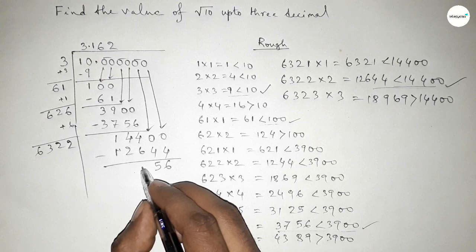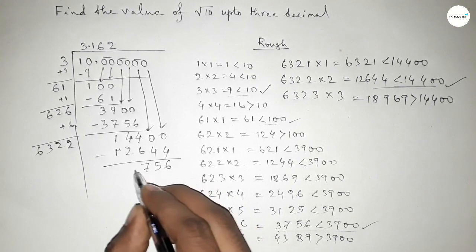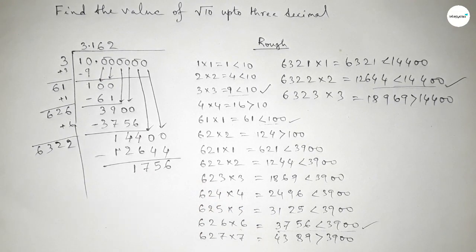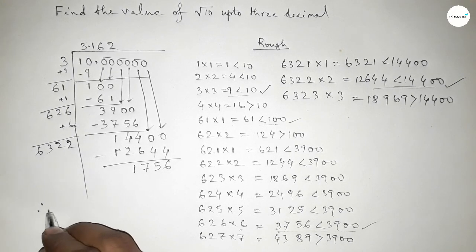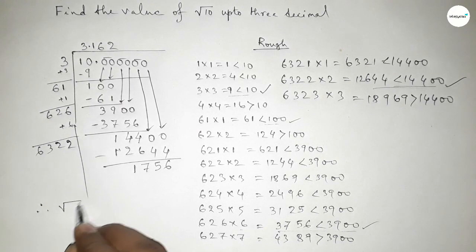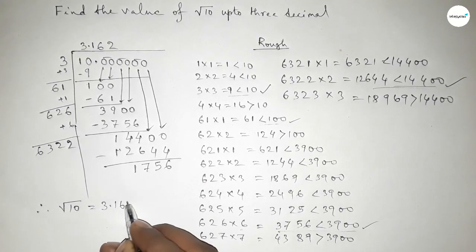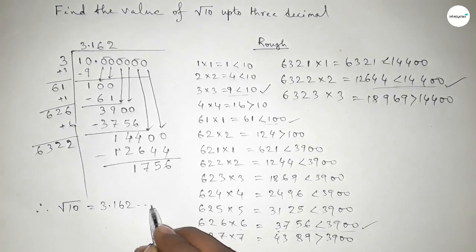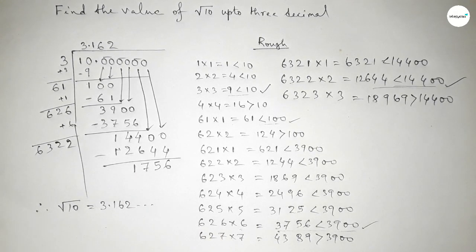We can continue to find the value of root 10, but we have to find it up to 3 decimal places. So the value of root 10 equals 3.162. That's all, thanks for watching.